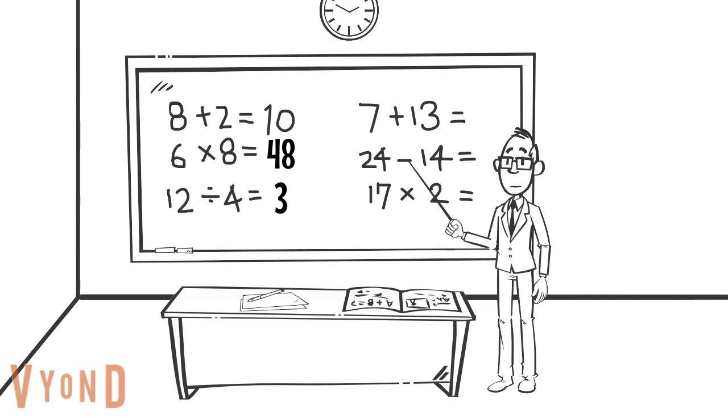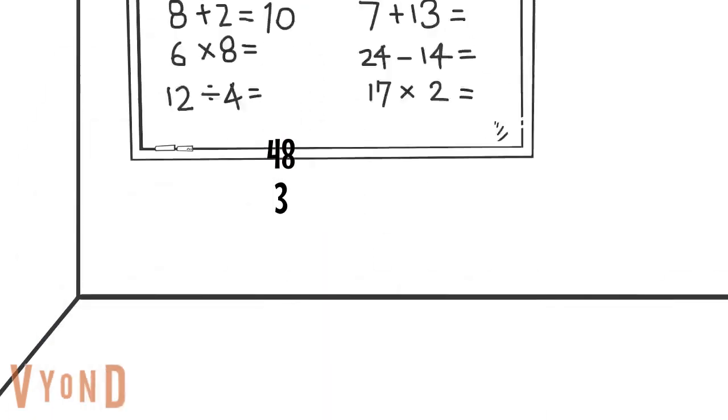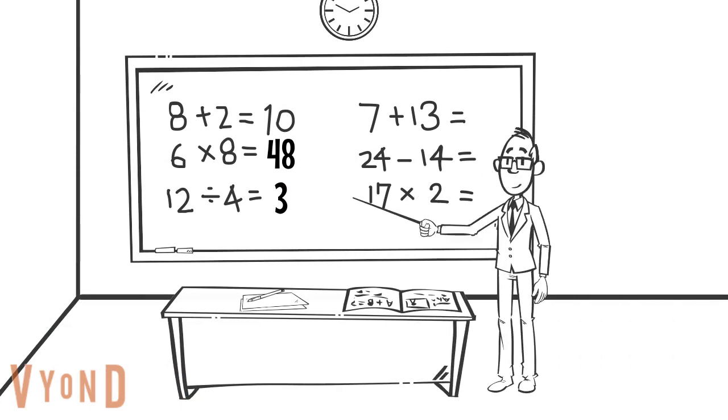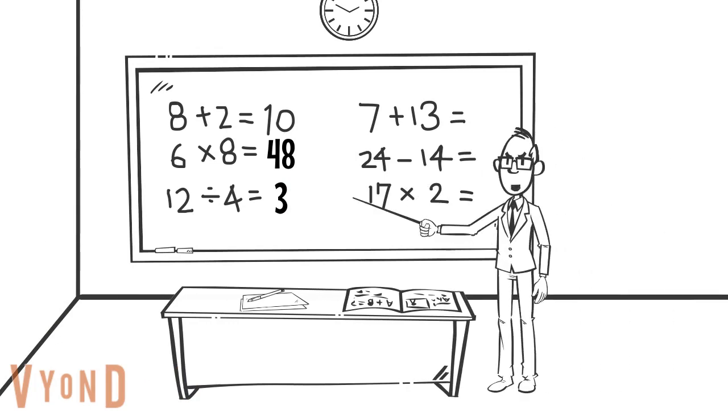So what is seven plus thirteen? One thousand. Haha, you're wrong. The correct answer is twenty. Now try that again. Fine. It is actually twenty.